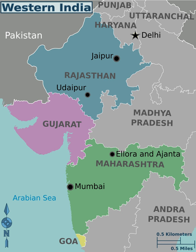Western India is a loosely defined region of India consisting of its western part. The Ministry of Home Affairs in its Western Zonal Council Administrative Division includes the states of Goa, Gujarat, and Maharashtra along with the Union Territory of Daman and Diu and Dadra and Nagar Haveli, while the Ministry of Culture and some historians also include the state of Rajasthan.